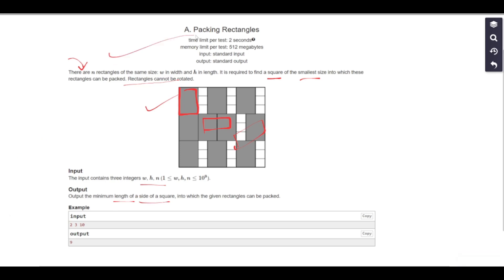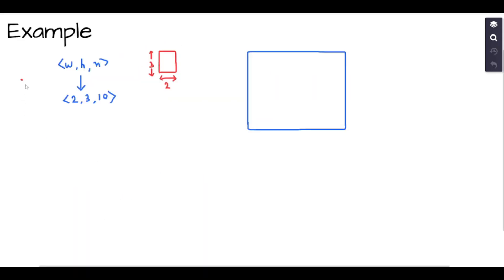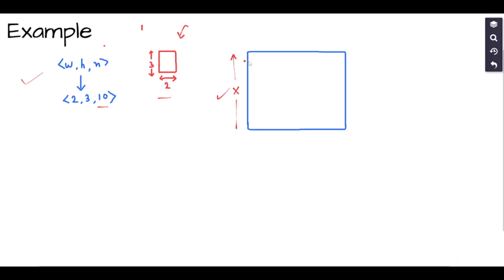Let's understand the problem using an example. The tuple given is (2, 3, 10) — a rectangle with width 2 and height 3, and we have 10 such rectangles. We want to pack these into a square of minimum size. Let's say the square that holds all 10 rectangles has a side length x — this x is our answer. We place the rectangles into the square in rows, and we want to find the minimum such x.